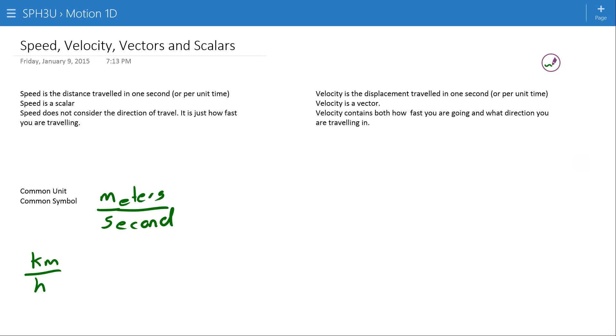So speed is given the symbol V, which is your distance over time. V is an odd choice here for speed, obviously, but if we recognize that we're keeping it consistent with velocity, which is displacement per unit time, then you can see why we've used the letter V.